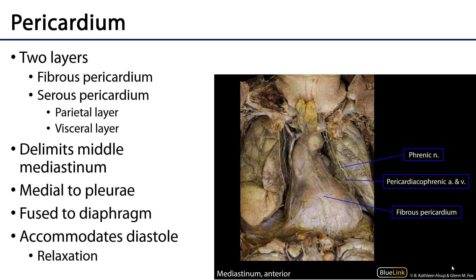The pericardium is a multi-layered sac which surrounds the heart. It has two distinct layers: the fibrous pericardium, which is the outermost tough layer, and deep to that is the serous pericardium, which is a serosal membrane with two components. There is a parietal layer fused to the fibrous pericardium, and a visceral layer fused directly to the heart such that it is part of the heart wall.